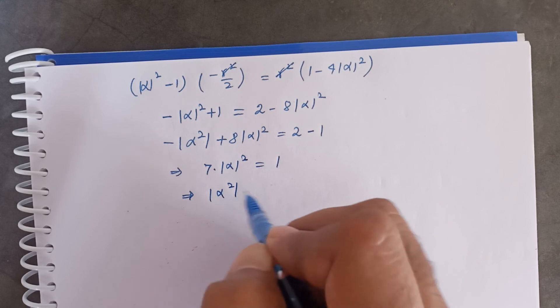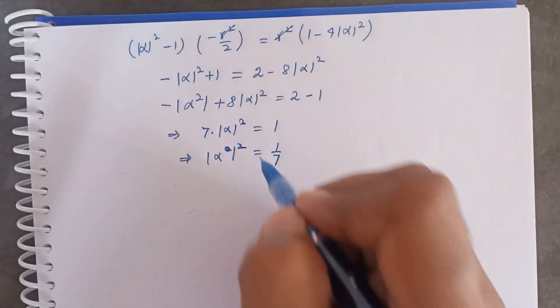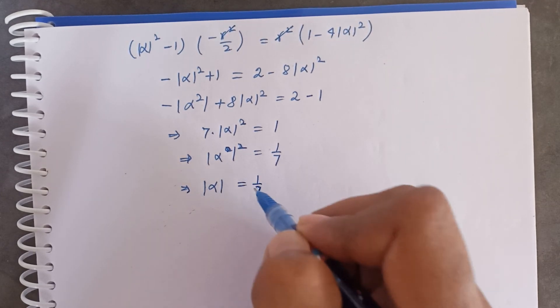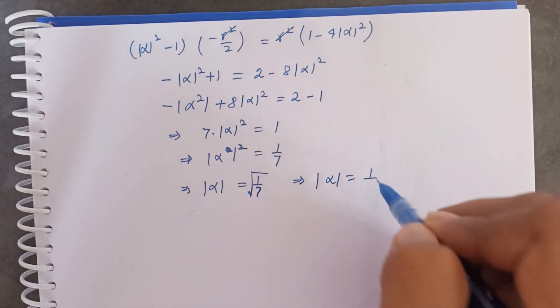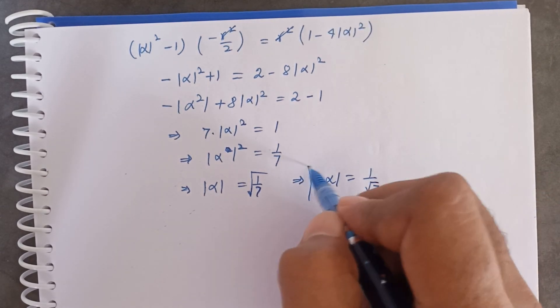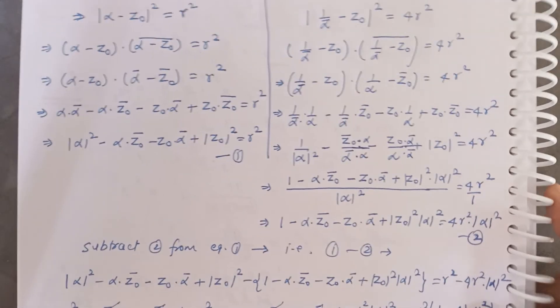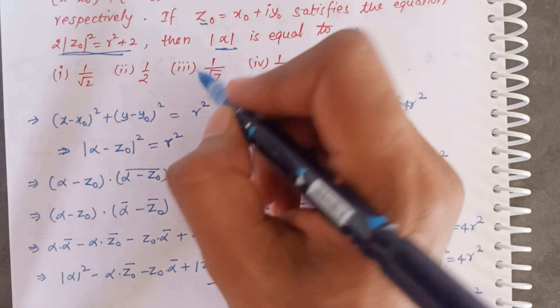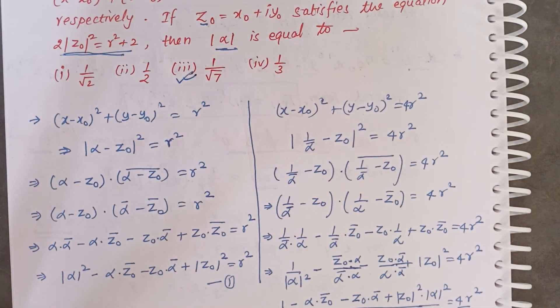Finally, from |α|² = 1/7, we get |α| = 1/√7. So mod of alpha equals 1 by root 7. Therefore the answer is 1/√7. Thanks for watching!